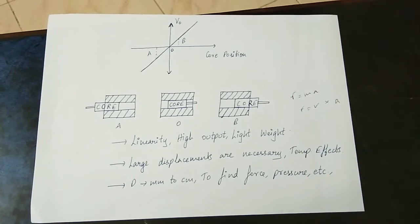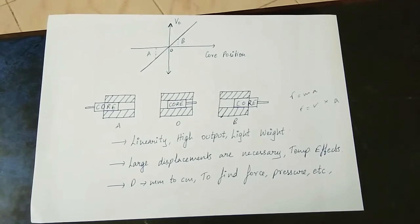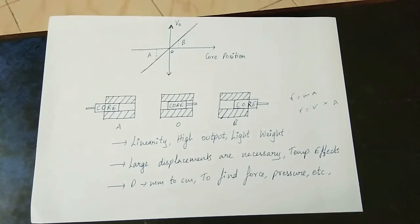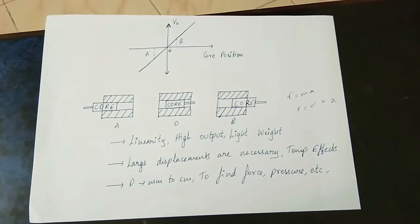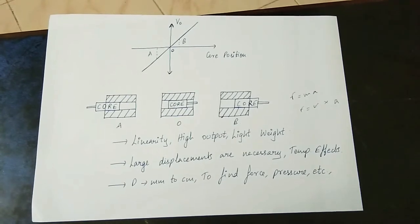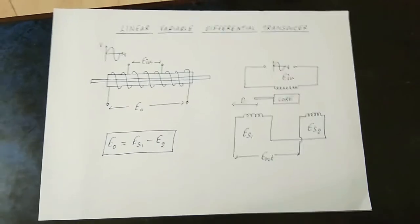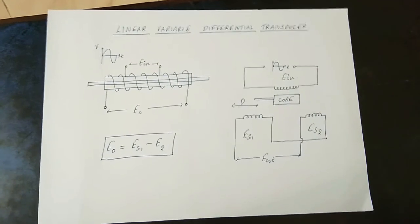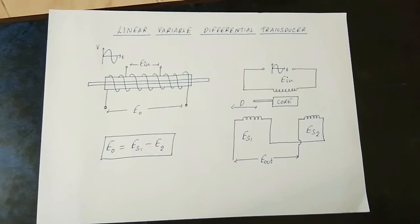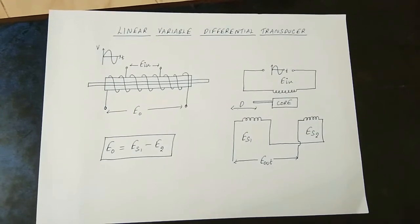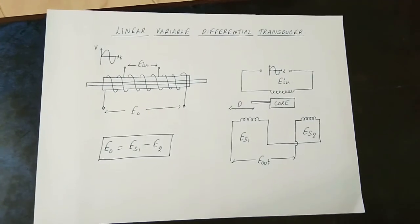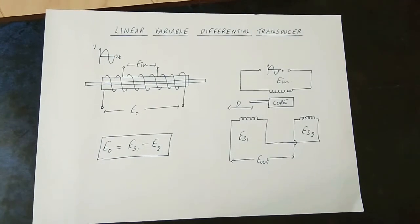We use electrical engineering knowledge and do electrical based on the concept. That is what I am going to say — Transducer. In this case, we are going to use a transducer. What I am going to say is LVDT — that is Linear Variable Differential Transducer. I am converting one quantity into another quantity: one physical quantity or electrical quantity.